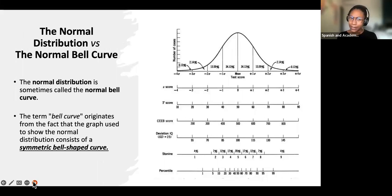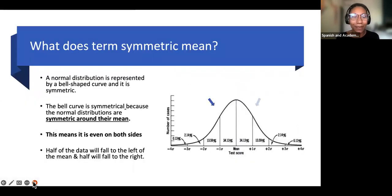So what's the difference between that normal distribution and normal bell curve? The normal distribution is sometimes also called the normal bell curve because the term bell curve originates from the fact that the graph used to show the normal distribution consists of a symmetrical bell-shaped curve. What does that word symmetric or symmetrical even mean? A normal distribution is represented by that bell-shaped curve and it's symmetric, meaning that it's equal on both sides. As you can see, those percentages mirror each other. That means half of the data will fall on the left and half of the data will fall on the right.